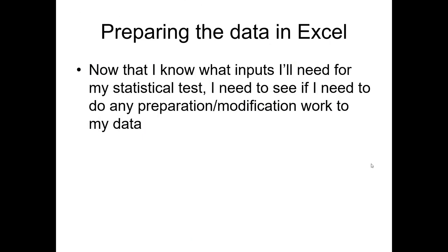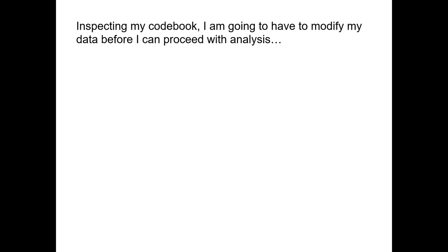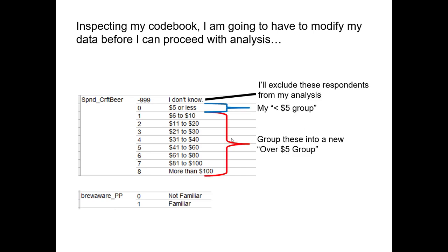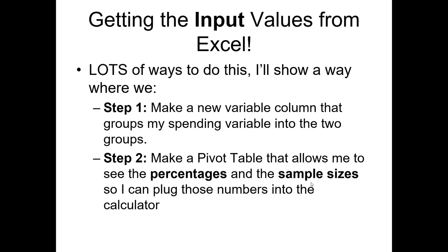Now that I know the inputs needed, I need to do prep work on my dataset to derive those values. Inspecting my codebook, the spend craft beer variable will need to be modified into a new variable to create the two groupings. I'll ignore people who said they don't know how much they spend. The less than five dollars group is coded as 0, while anyone coded from 1 to 8 qualifies for the over five dollars group. I'll create a new variable that aggregates those codes into one group, then build a pivot table to see the percentages and sample sizes.